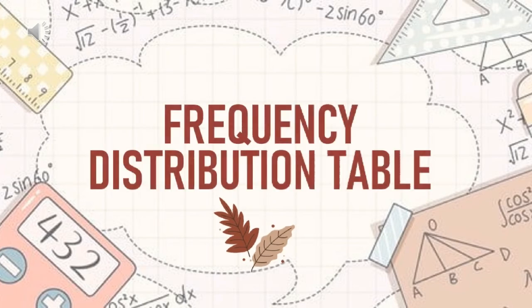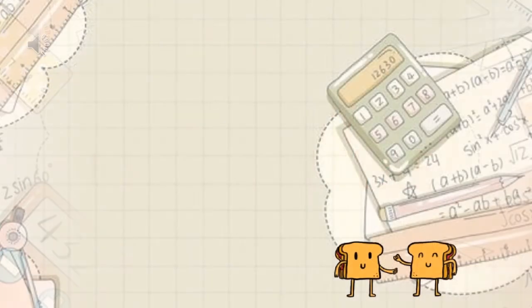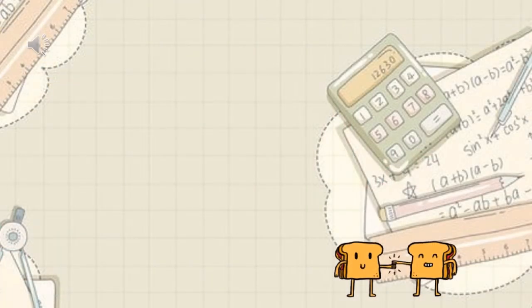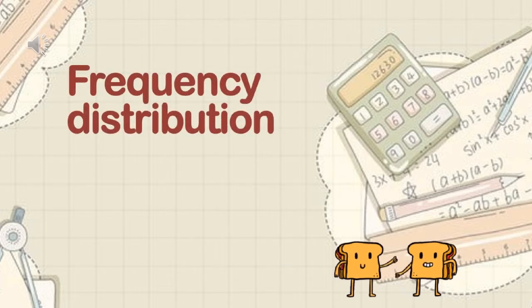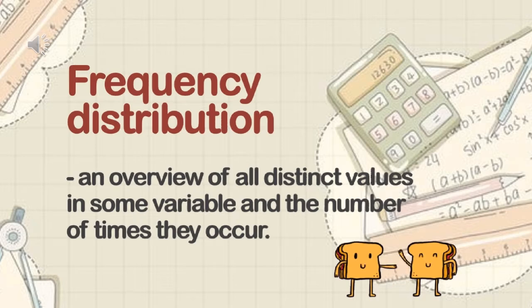We will construct a frequency distribution table. But first of all, we must know what frequency distribution is. Frequency distribution is an overview of all distinct values in some variable and the number of times they occur. It is also used for summarizing categorical variables.